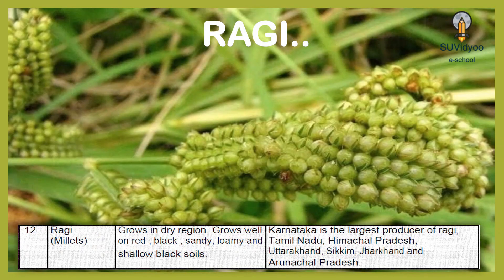Ragi is also a millet crop. It grows in dry regions and grows well on red, black, sandy, loamy and shallow black soil. Karnataka is the largest producer of Ragi, followed by Tamil Nadu, Himachal Pradesh, Uttarakhand, Sikkim, Jharkhand and Arunachal Pradesh.